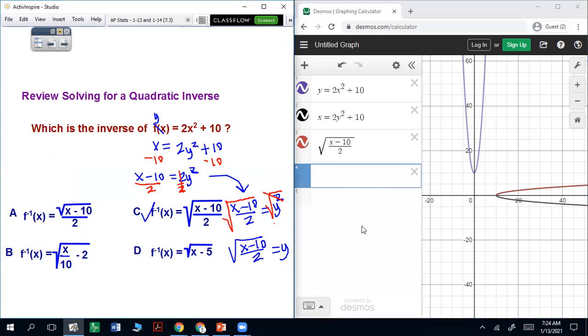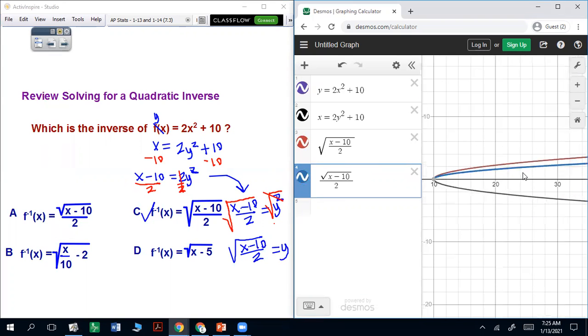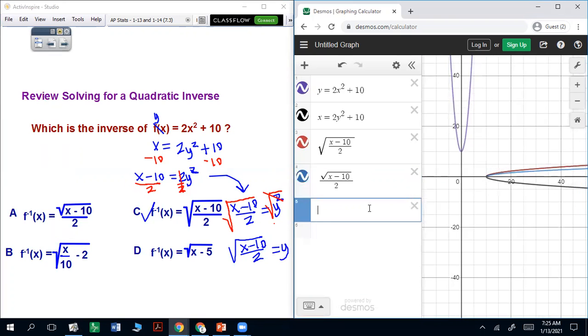If you do the other answer choices, let's do sqrt, let's say x minus 10 and then divide that by 2 but put the 2 on the outside. They're not the same. And if you go to the third one, sqrt x over 10 minus 2, that's different.